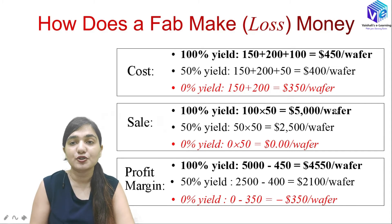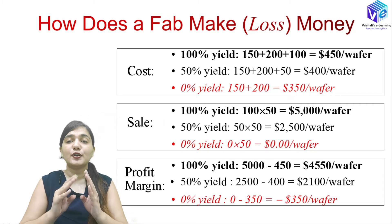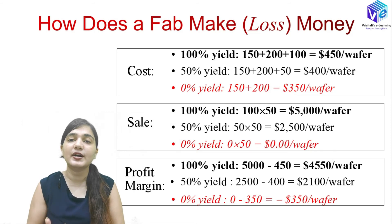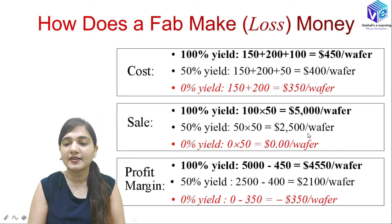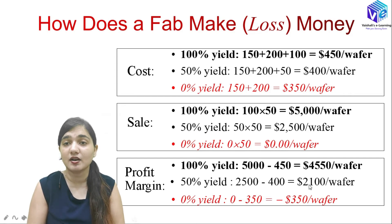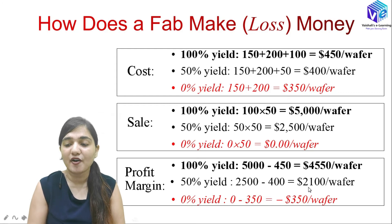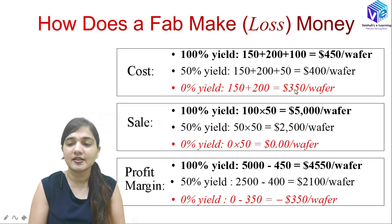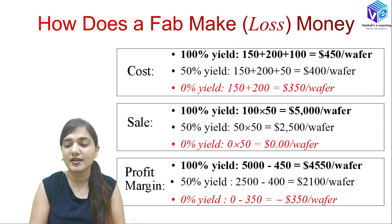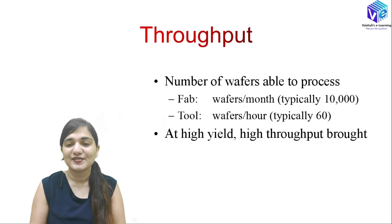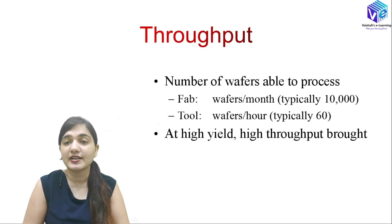You can see how companies make big profits with IC fabrication. At 50% yield, sales are $2,500 against a cost of $400 — still more than four times the input cost recovered as profit. At zero percent yield, sales are zero and cost is $350, resulting in a loss of $350 per wafer. Even at 50% yield, the industry makes huge money.